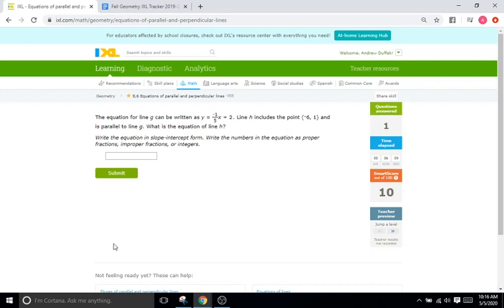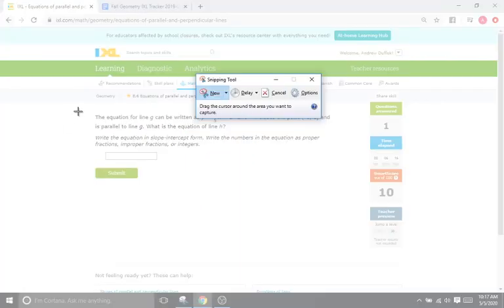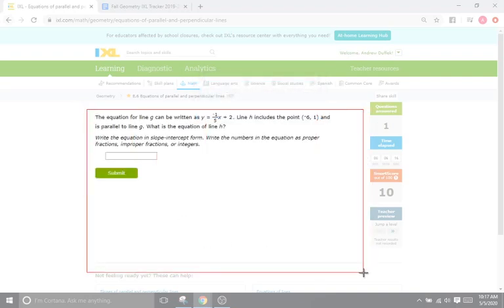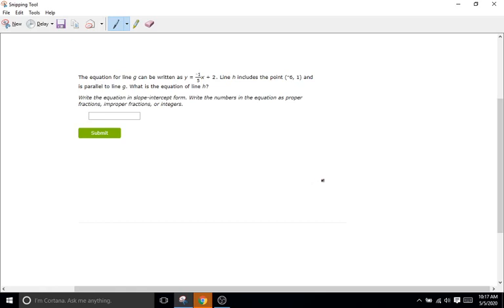Next problem. The equation of line G can be written as y equals -1/5x plus 2. Line H includes the point (-6, 1) and is parallel to G. What is the equation? Same deal as last time. We're going to use our y equals mx plus B. And let's identify those three elements that we need. We need the equation of our first line, we need the point which goes through the other line H, and then we need the fact that these lines are parallel.